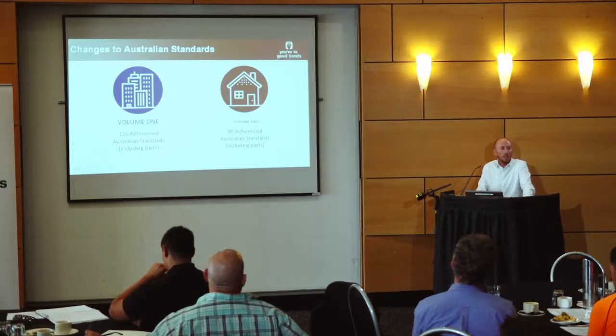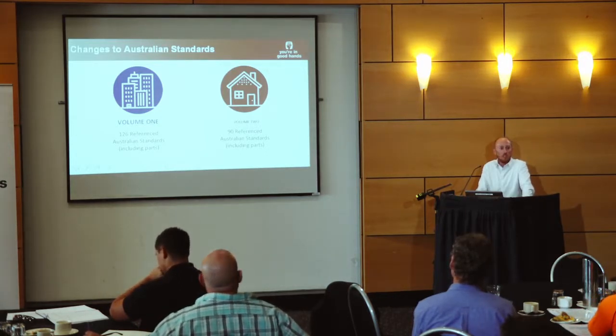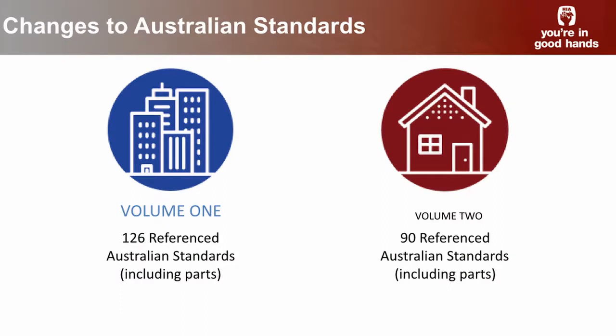The standards changes: as mentioned at the outset, there are 90 reference documents in volume 2 and 126 in volume 1. Around 50% of the changes to these documents have had some element of change to the code — new additions, revisions, corrections, amendments, things pulled out, new standards incorporated, and things like that. Here are the standards of note we're going to talk about today.